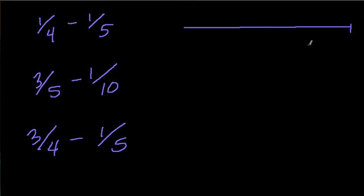With a double number line, you want to pick a number that 4 and 5 are both factors of, a friendly number like, let's say, 20. And then what we can do is say, what's one-fifth of 20? That's just 4 because 5 goes into 20 four times.